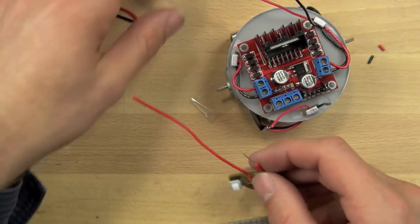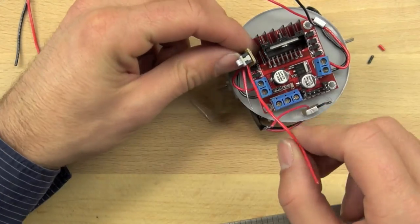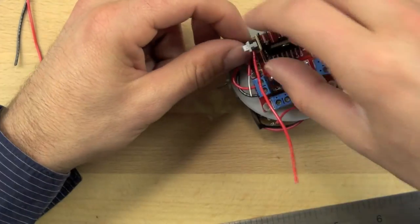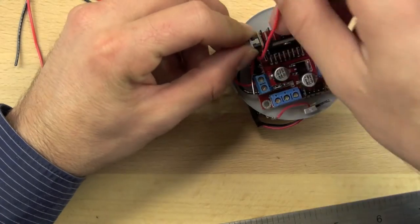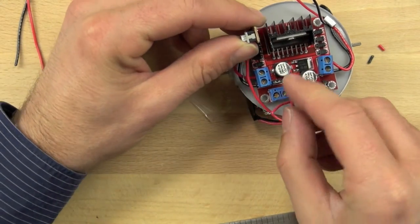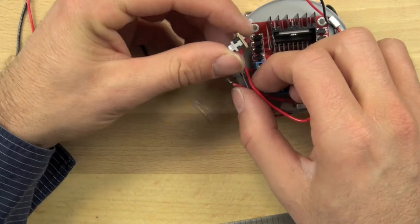In this video we're going to connect the power switch and run the power wires to the L298 motor controller. We've got our power switch that we made in a previous video and you can see how we have a long wire and a short wire.